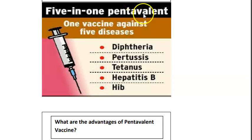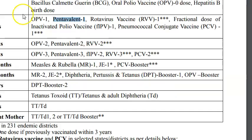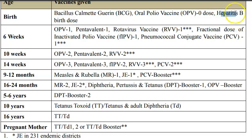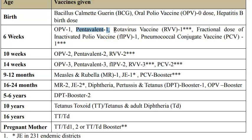BCG is given intradermal, oral polio vaccine is given orally, and hepatitis B is intramuscular. At six weeks, you give oral polio vaccine 1 and pentavalent 1 (DPT + hepatitis B + Haemophilus influenzae type b). Then there is also the rotavirus vaccine, marked with three stars.